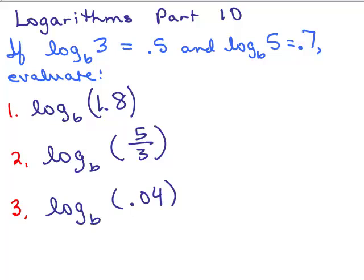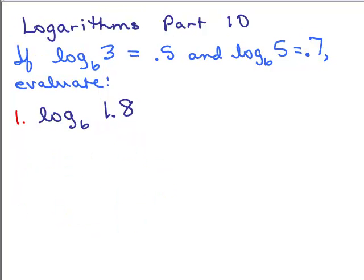In this video, we do some more practice with the properties of logs and we evaluate these three problems. This is part 10 of logarithms. In part 9, we were evaluating logs, but we said the log of 3 base B was like some letter. Now we're actually going to give it a value, like 0.5, and we have log of 5 of that same base equal to 0.7. You could figure out what the base is, it would be very difficult, but with a calculator and some knowledge you could do that, but let's not worry about that.